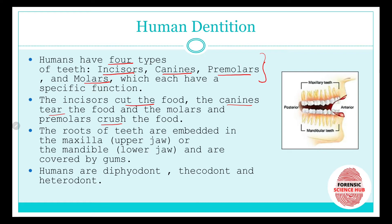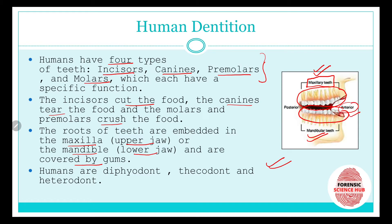The roots of the teeth are embedded in the maxilla — the upper jaw — or the mandible — the lower jaw — and they are covered by gums. The upper teeth are known as maxillary teeth, whereas the lower teeth are mandibular teeth. The teeth visible from the front are anterior teeth and those at the back are posterior teeth.